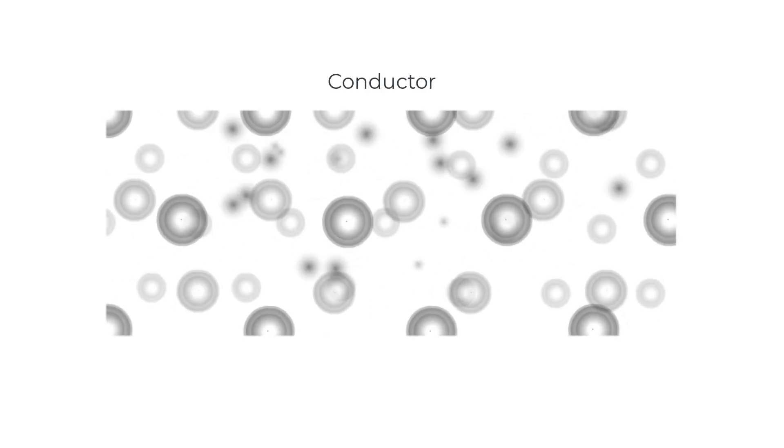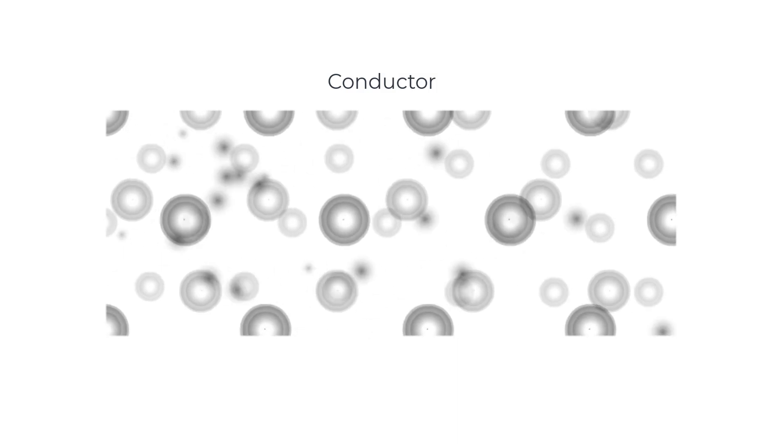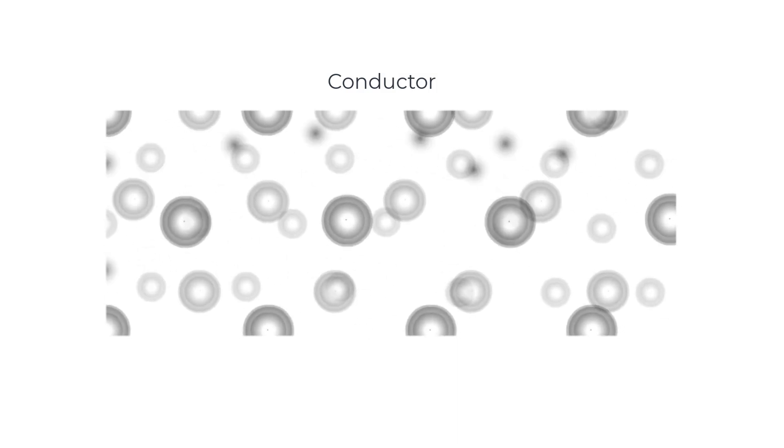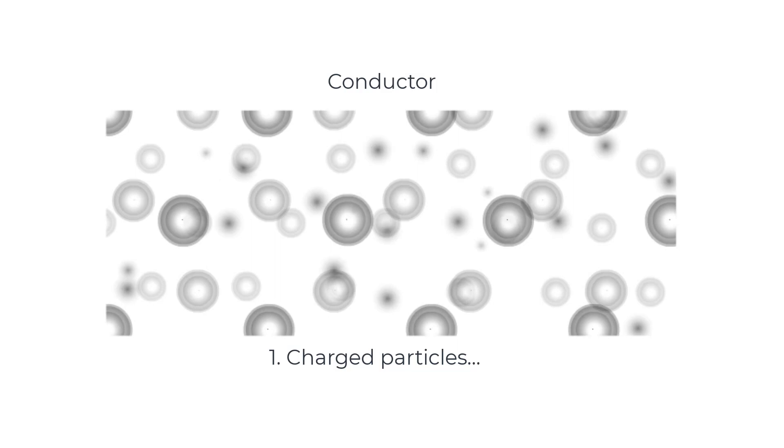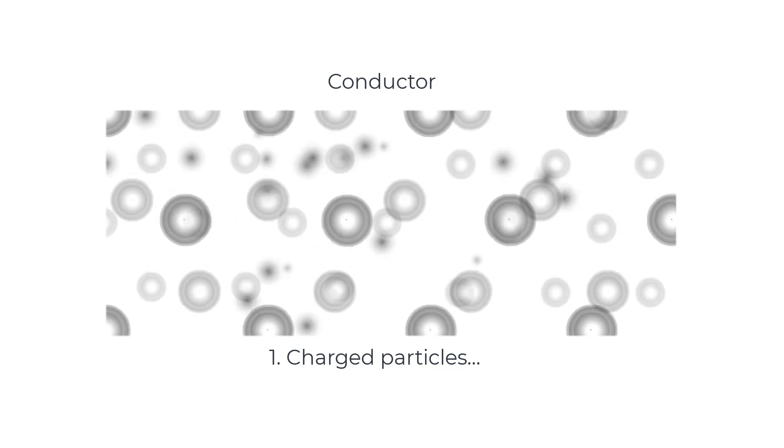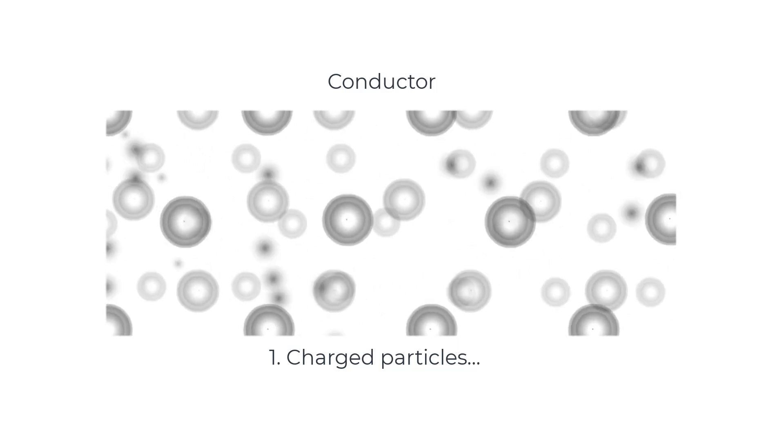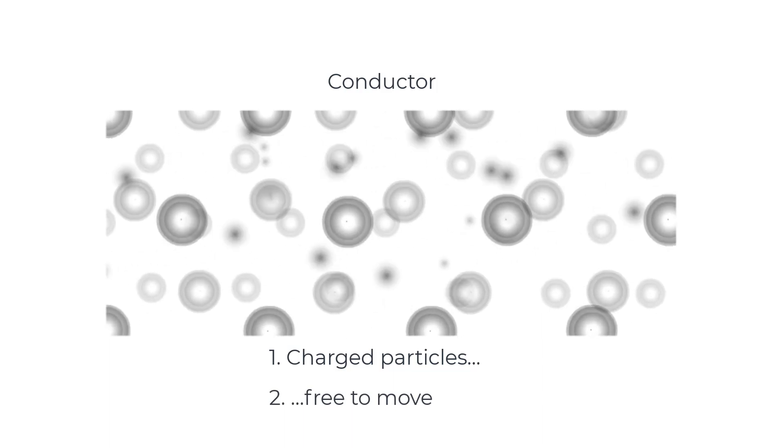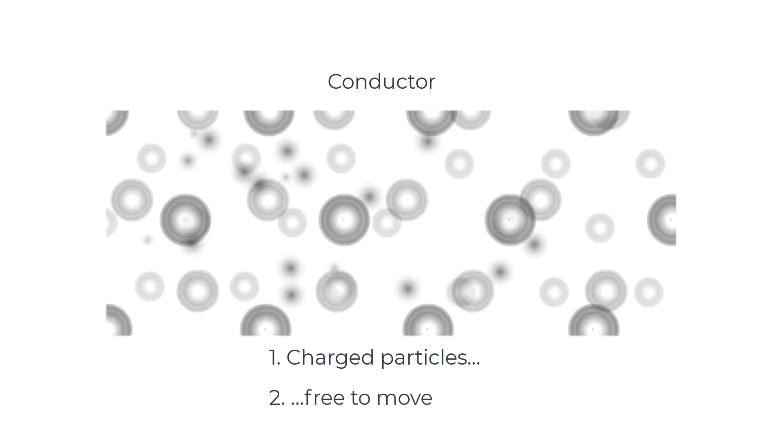So for something to be a conductor, we need two things to be true. It has to contain charged particles like electrons or ions, and those charged particles must be free to move. If either of those things isn't true, then you have an electrical insulator.